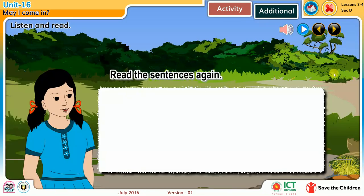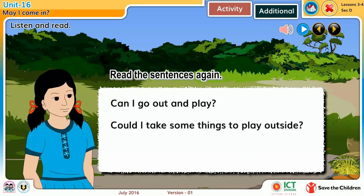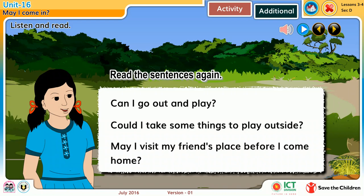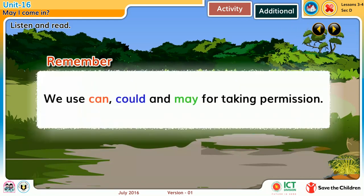Listen and read. Read the sentences again: Can I go out and play? Could I take some things to play outside? May I visit my friend's place before I come home? Remember, we use can, could, and may for taking permission.